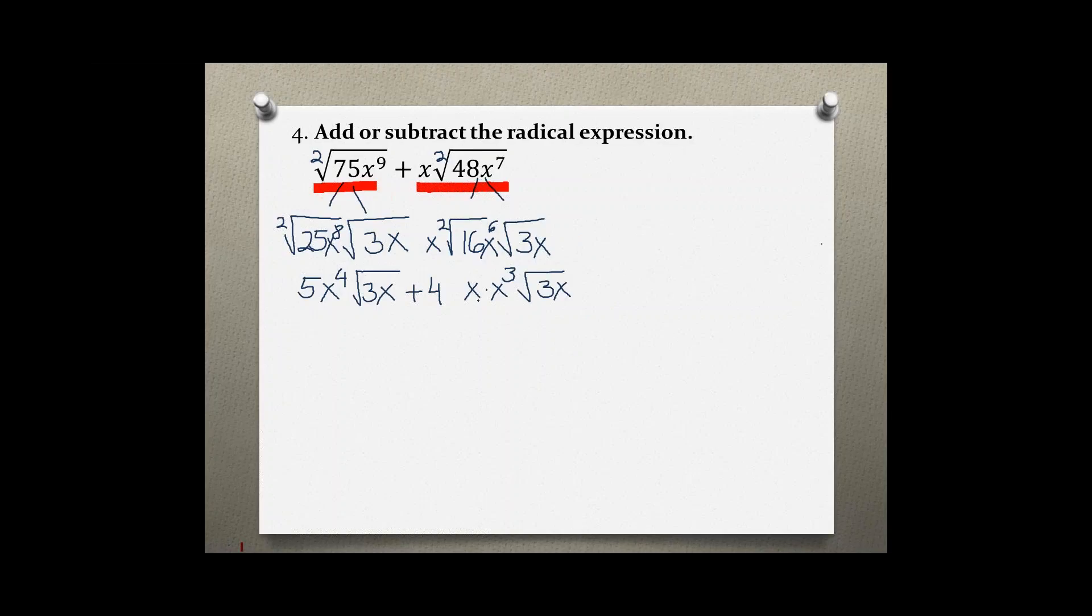Now let me simplify that. I had an x outside, and I got an x to the 3rd power once I took out my perfect square root. I can multiply these two together. This has an imaginary exponent of 1, so when I multiply them together I basically add their exponents, and I get x to the 4th power.